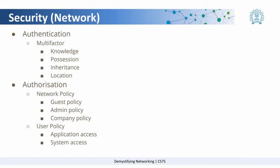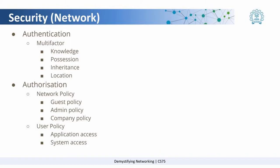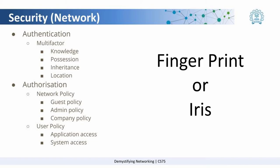What do we mean by multi-factor? Certain things — a knowledge about some information, a certain possession, and a certain inheritance — can prove that you are the right person. Knowledge is something like a password, something that you remember. Possession is say your ID card, something that you possess because you belong to the company. And inheritance is something that has been with you since you were born, for example your fingerprints or your iris.